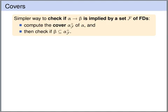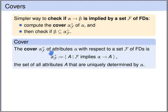The use of the Armstrong axioms can sometimes be complicated. A simpler way to check whether a functional dependency is implied by a set of functional dependencies F is to use covers. We first compute the cover of the left-hand side and check whether the right-hand side is a subset of this cover. The cover of a set of attributes alpha with respect to a set of functional dependencies F is the set of all attributes that are uniquely determined by alpha — formally, the set of all attributes A such that F implies alpha uniquely determines A.